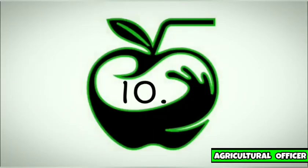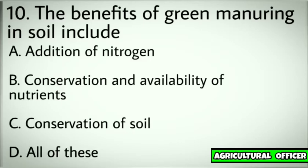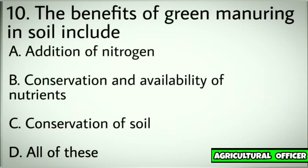Question number ten. The benefits of green manuring in soil include. Options: A. Addition of nitrogen. B. Conservation and availability of nutrients. C. Conservation of soil. D. All of these. Correct answer: D. All of these.